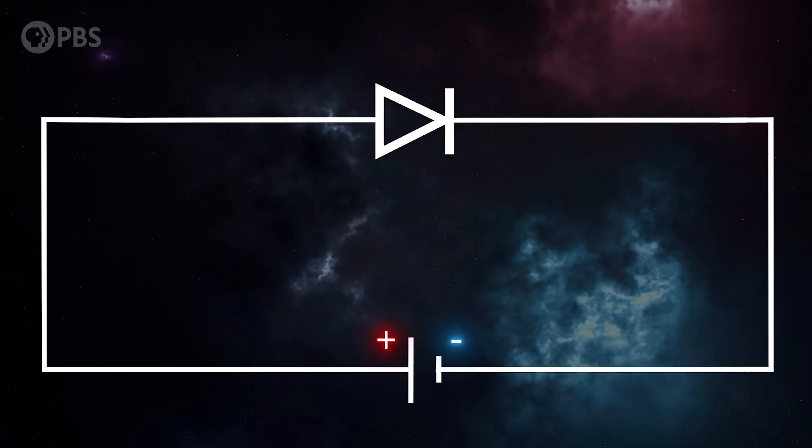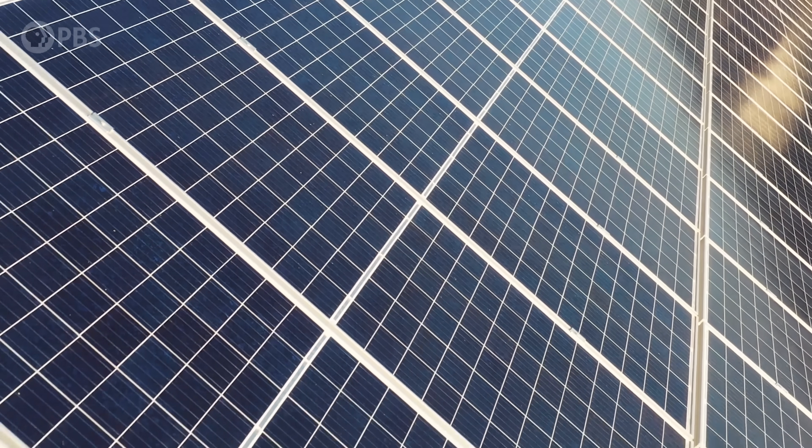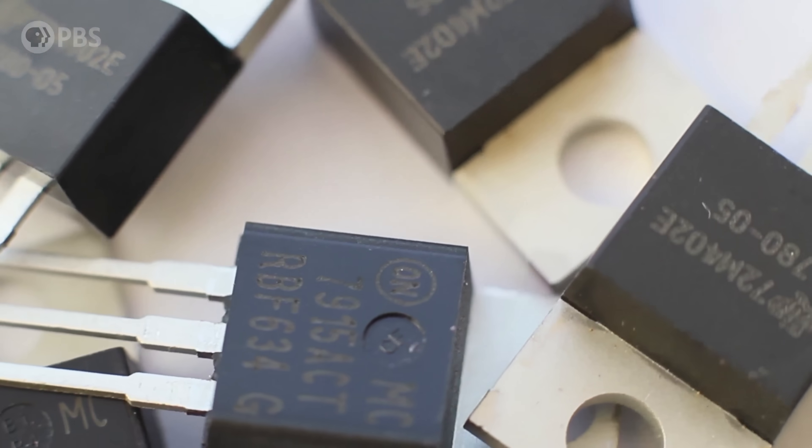That's the diode, a valve for electricity. And these P-N junctions also drive solar cells, LEDs, and transistors. And they all depend on the behavior of these quasiparticles, these holes.